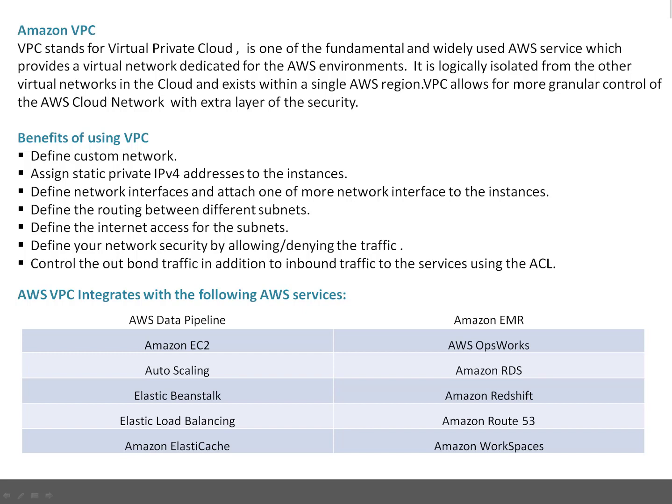You can define network security by allowing or denying traffic — basically you have control over which particular traffic is allowed and which is restricted or denied. You can control outbound traffic in addition to inbound traffic using ACLs, basically Access Control Lists, or Network Access Control Lists.